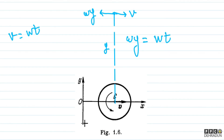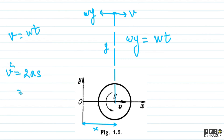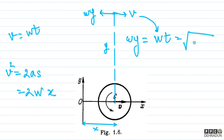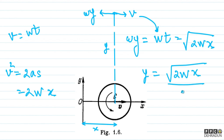Now we need to eliminate t. Since the center is moving with constant acceleration, using v² = 2as (because u is 0), we get v² equals 2 times w times x, so v equals under root of 2wx. Therefore, y equals under root of 2wx divided by omega.